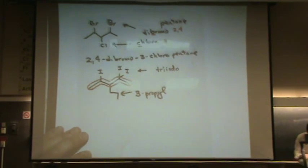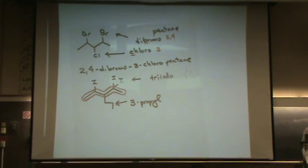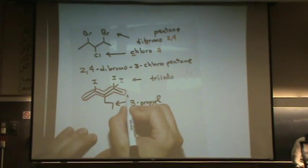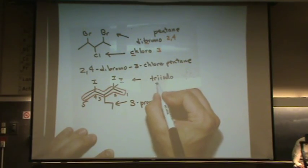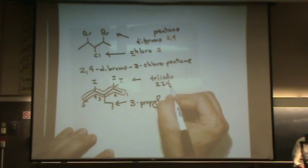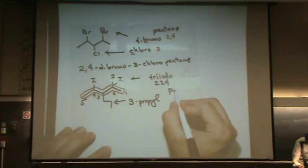And then, am I going to number the one position on the right or the left? If I'm going to name it on the right, that will give my iotos the lowest possible number. So, if I number from the right, 1, 2, 3, 4, and 5, I'll have a 2, 2, 4. With the longest chain being a pentane.